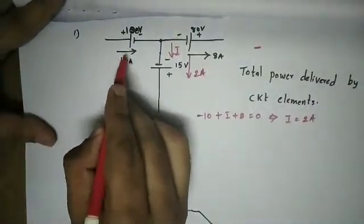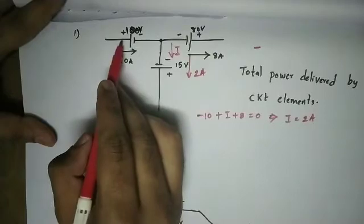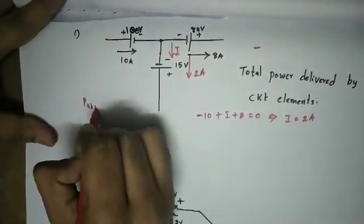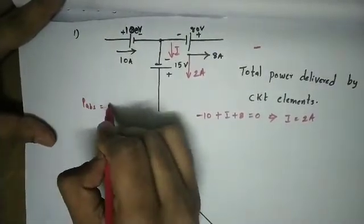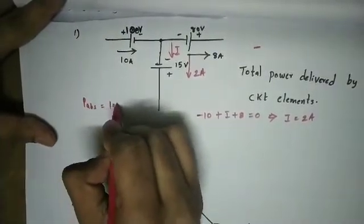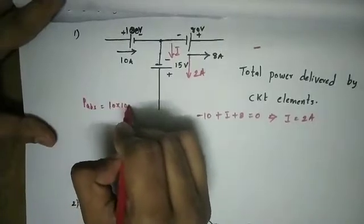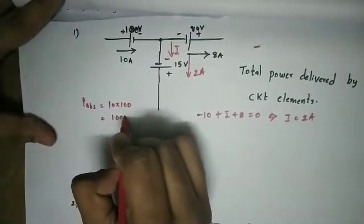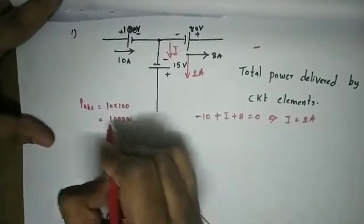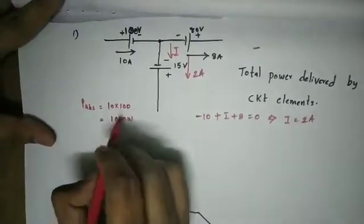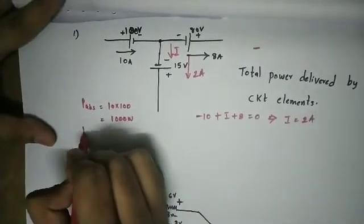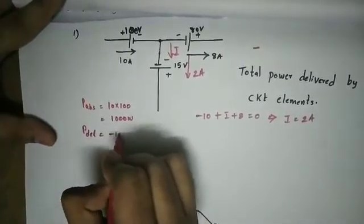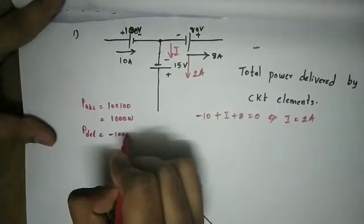Here we have a 10A current entering the positive terminal. Power absorbed is equal to 10 into 100, which is 1000 W. Absorbed power is 1000 W, so delivered power is minus 1000 W.